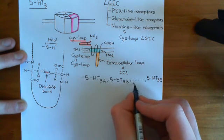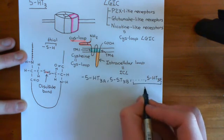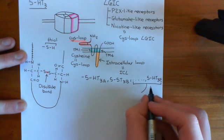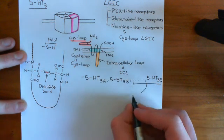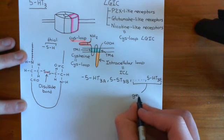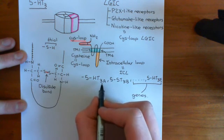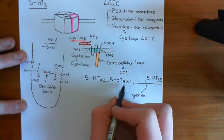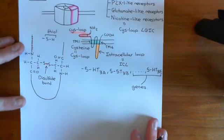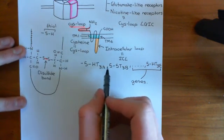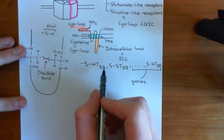The 5-HT3C, 5-HT3D, and 5-HT3E subunits have not been found to be expressed within cells, as far as we know. We have the genes for them, but we don't know if they're actually doing anything within the human body. The 5-HT3A subunit and the 5-HT3B subunit are the important ones — these are the two we know are expressed within certain human cells.